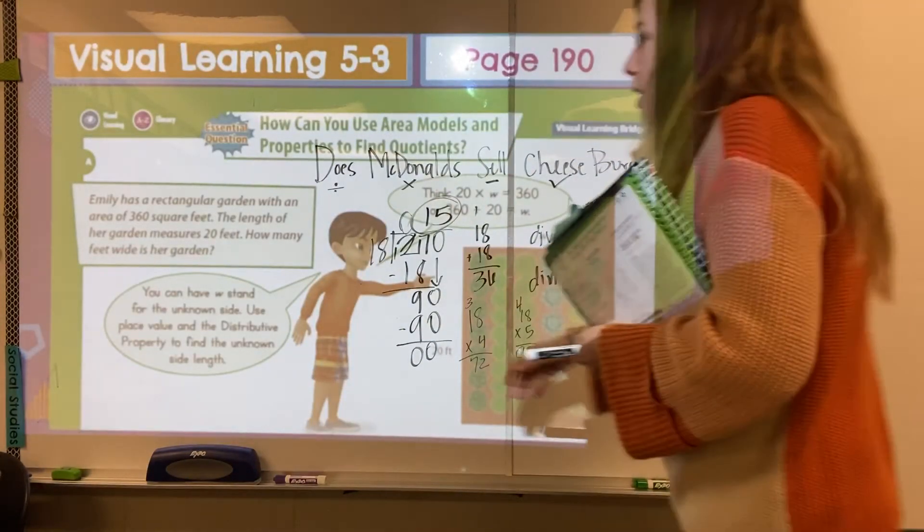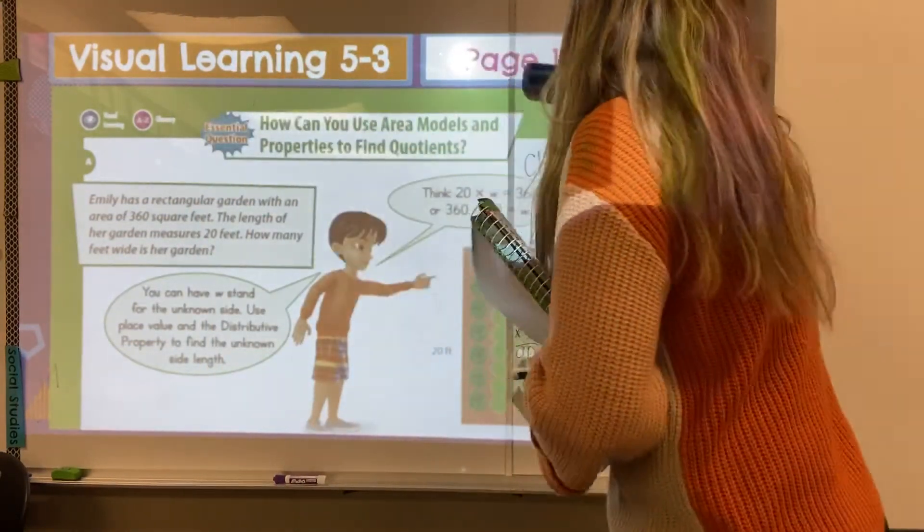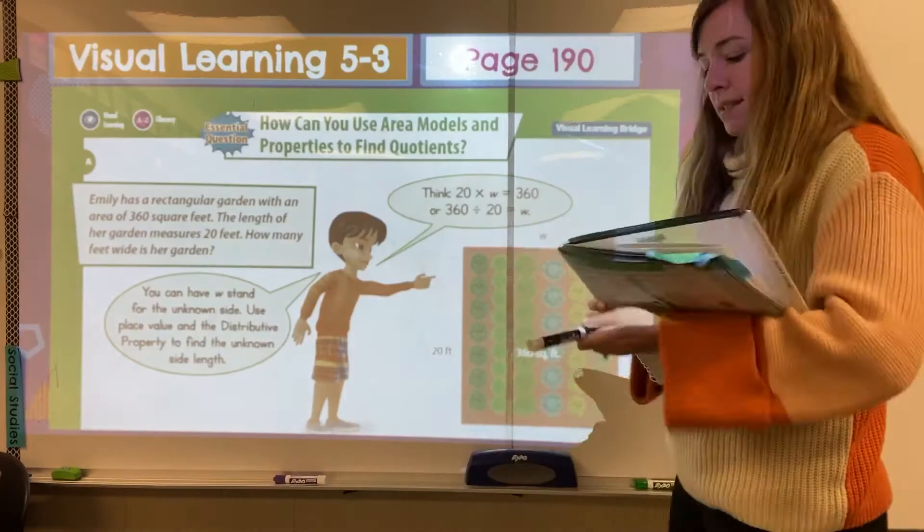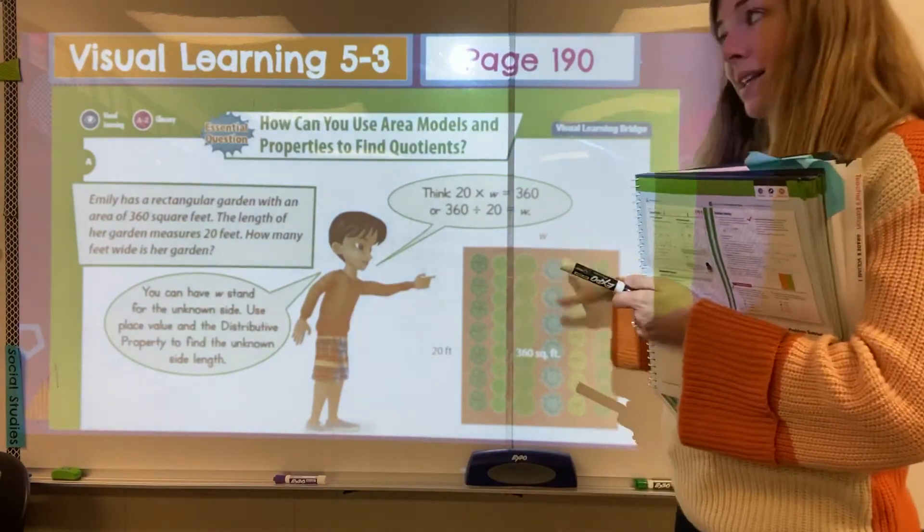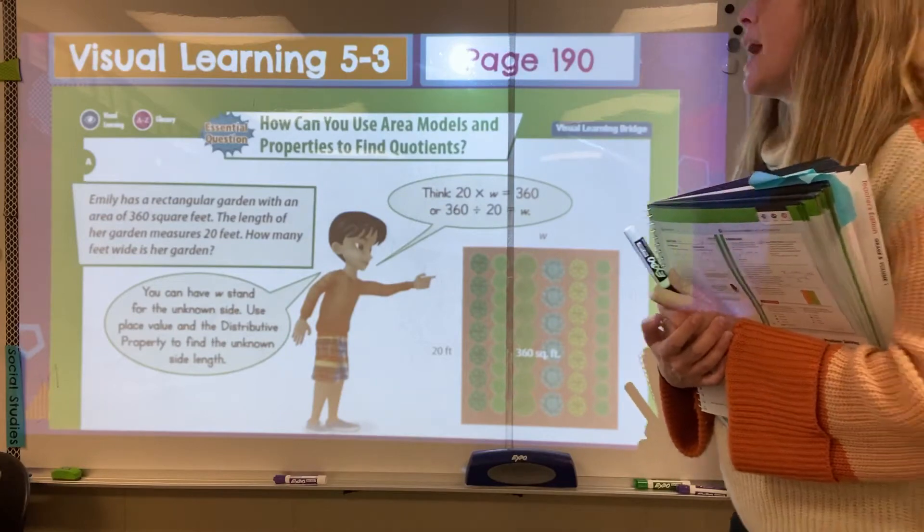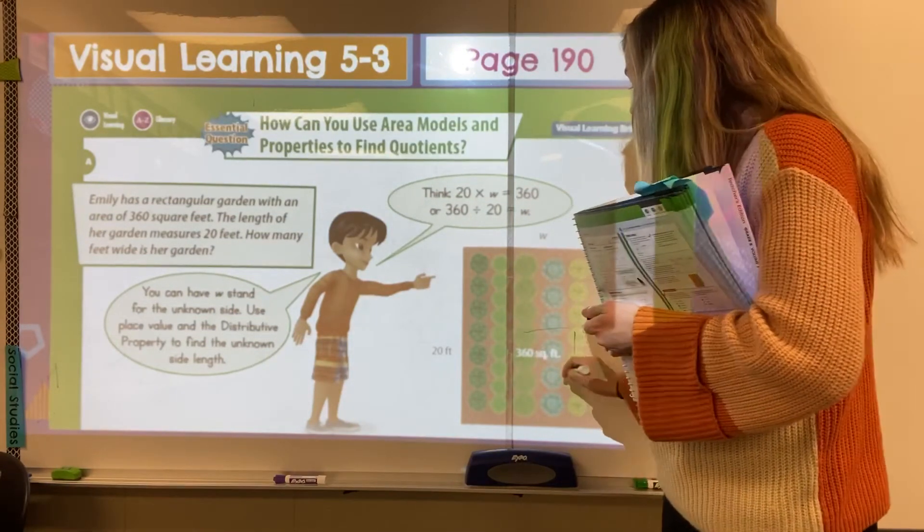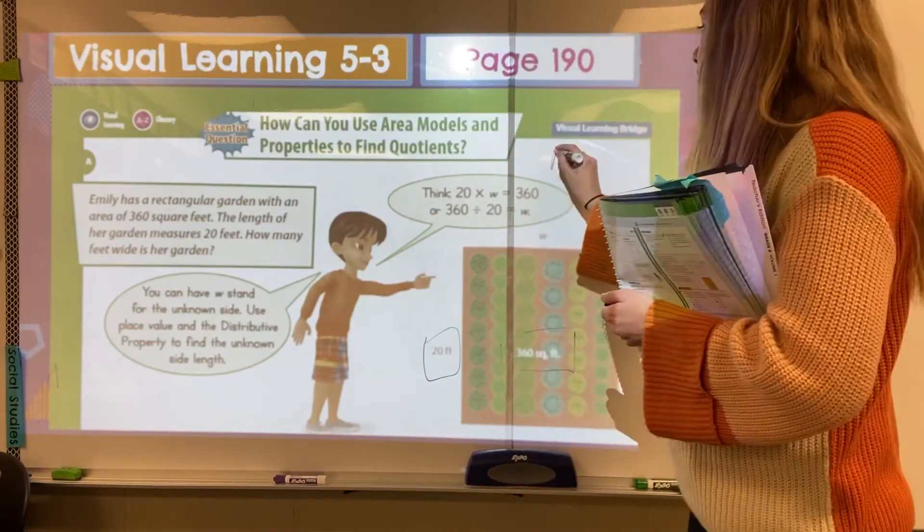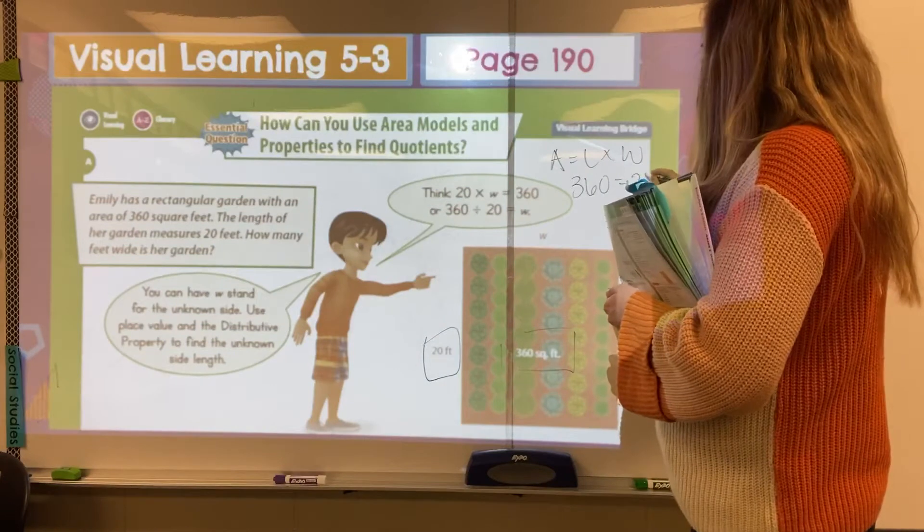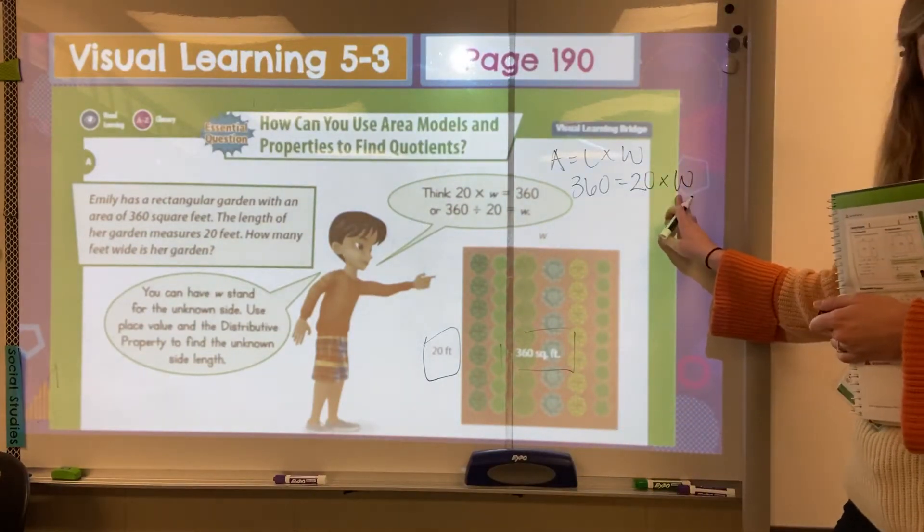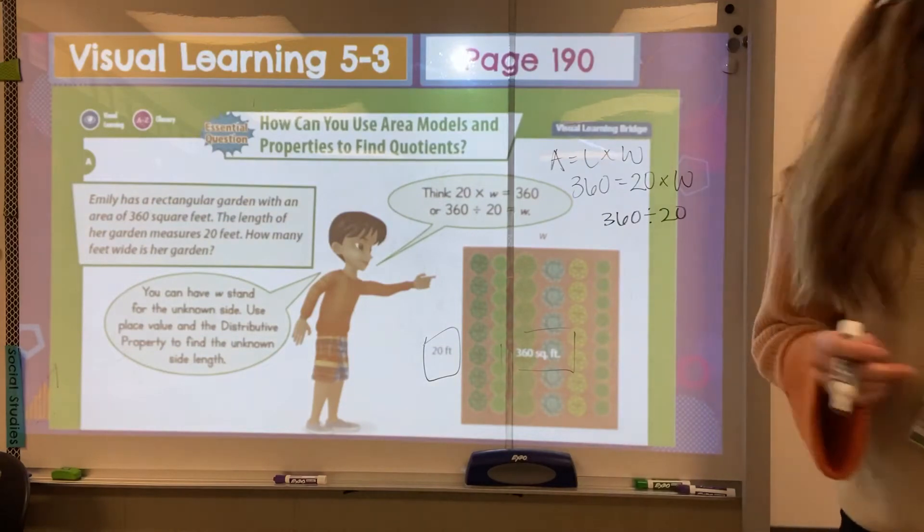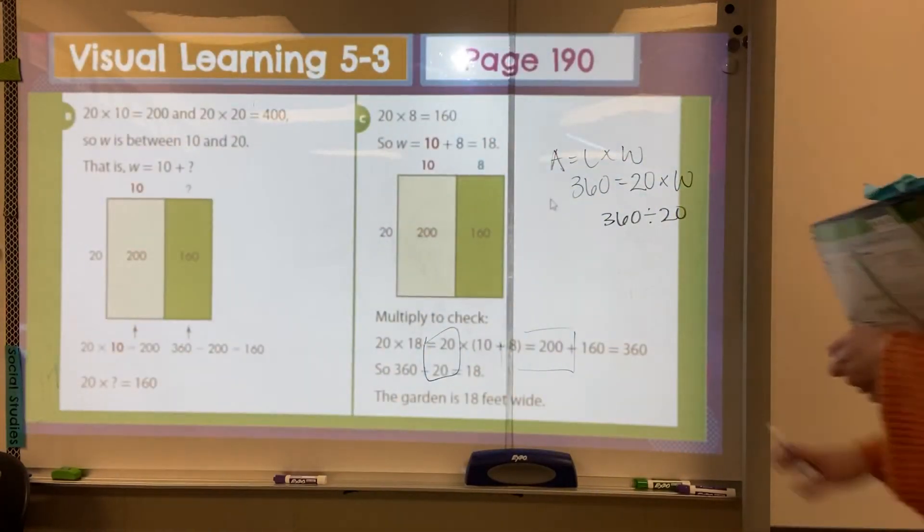Okay. Let's talk through our visual learning bridge. Here we go. So they're going to show a different way to model this. I think sometimes it can be a little bit trickier to break down when we do it this way, but it's just another way that you can solve through. Emily has a rectangular garden with an area of 360 square feet. The length of her garden measures 20 feet. How many feet wide is her garden? So they are giving us this middle number and they give us one out here. And so when we have area equals length times width, they're giving us the 360 equals the length is 20 times our W is still a variable because we don't know that. So what you're really going to do here is your 360 divided by 20 to get that W.